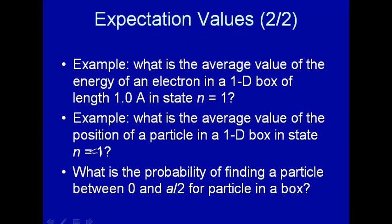The energy of the electron in a 1-dimensional box is 1.21 times 10 to the minus 17th joules. So that wasn't new — we already knew how to do that. Here's a more interesting example: what's the average value of the position of a particle in a 1D box in the state n equal 1?